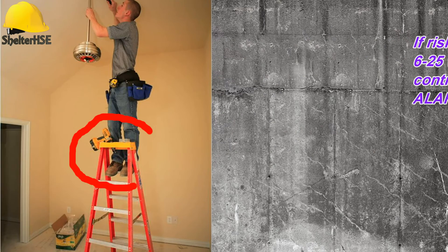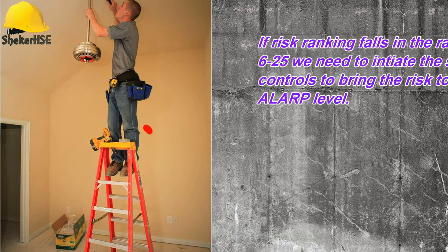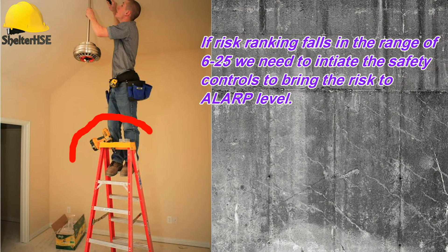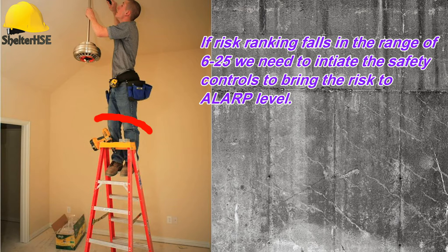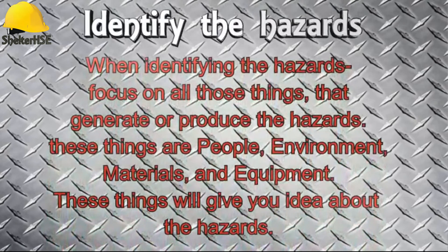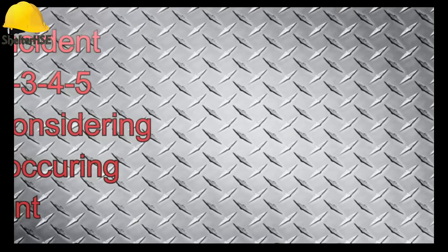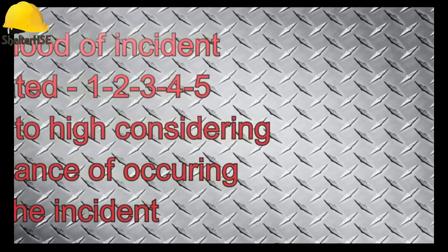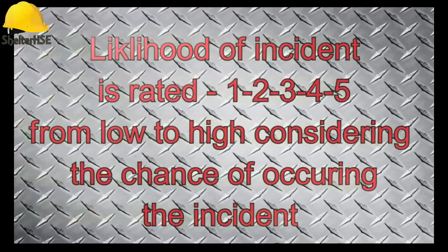We then evaluate the level of risk by multiplying the likelihood rating by the severity grade. If the risk falls in the range of level 6 to 25, we need to take various actions to implement controls to reduce the risk level as low as reasonably practicable, to achieve a safe and acceptable level of risk. We then select from several controls available to reduce the risk.